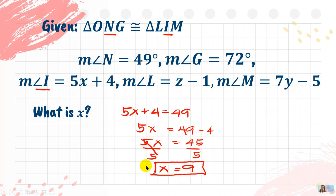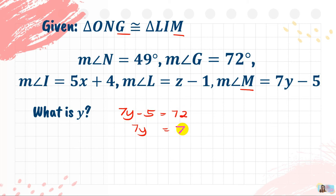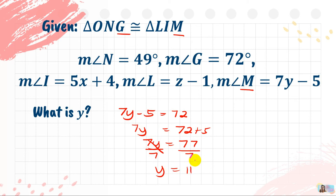To check: 5 times 9 is 45, plus 4 is 49. Correct. Next question — same given — what is the value of Y? The variable Y is in angle M, which is congruent to angle G. Measure of angle G is 72. So: 7Y minus 5 equals 72. Solving: 7Y equals 77 (adding 5 to both sides), then divide both sides by 7. Y equals 11. To check: 7 times 11 is 77, minus 5 is 72. Correct.